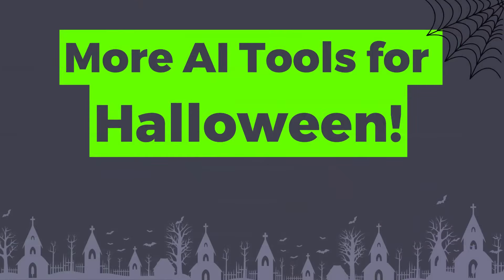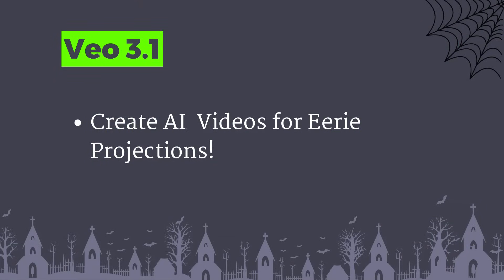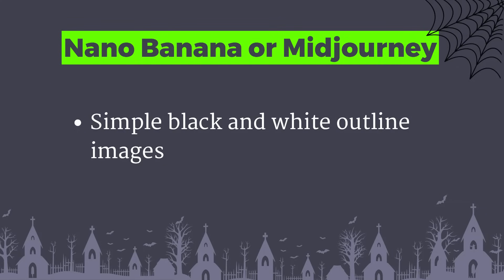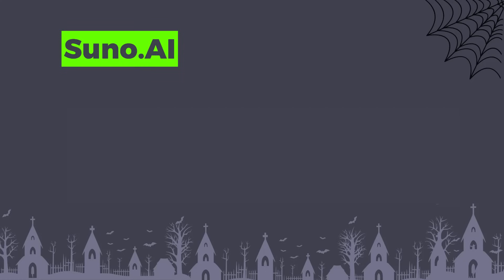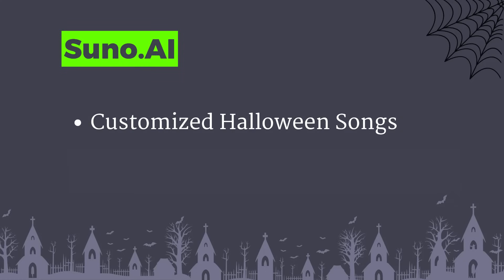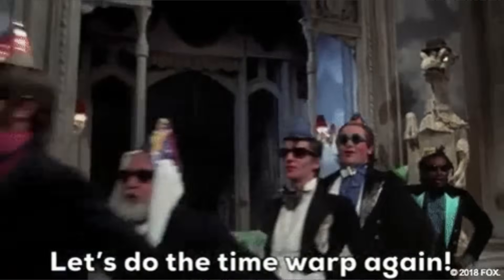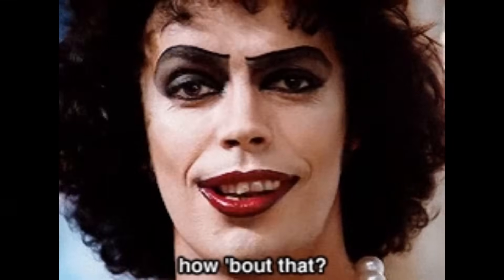Here are a few other AI tools that might come in handy this Halloween. For creating AI video and eerie projections, consider using the new VO3.1. For amazing pumpkin carving templates, use either Imagen or Mid Journey, and make sure to prompt for simple black-and-white outline images. Suno AI is a great way to create songs for your Halloween party — you can even turn your murder mystery dinner into a Rocky Horror Picture Show-type musical event using themed songs with Suno AI.